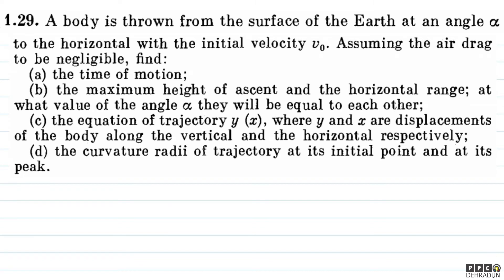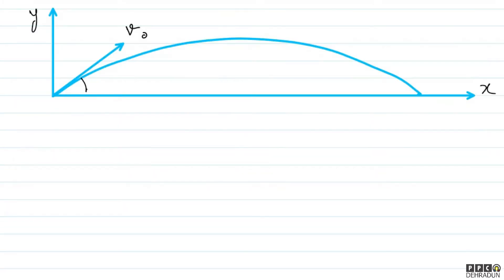Let's think about how we can do it. I have a diagram showing which way this initial velocity v0 is directed.